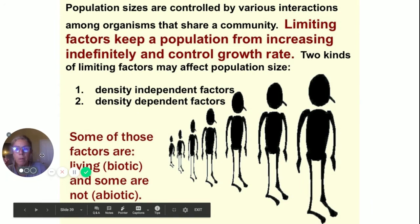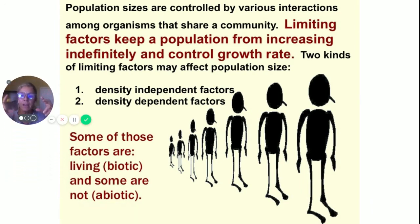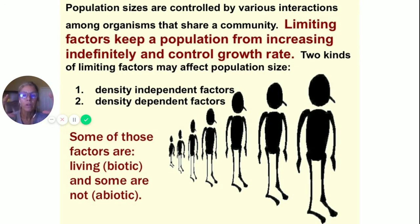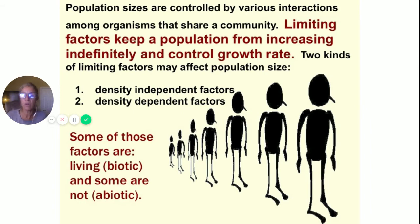Now let's talk about how population sizes are regulated. There are both density independent and density dependent factors. Density dependent factors are those where numbers matter — factors that keep the population from increasing indefinitely and control the growth rate. For density independent factors, like a rotten banana for fruit flies, they'll go until the banana is gone — it's not a factor of how many gnats there are, it's when the banana got thrown away.